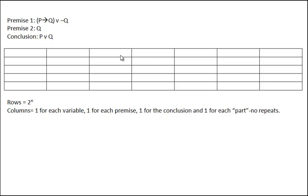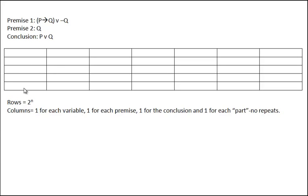When testing the argument for validity, we have to build a truth table. First, we determine the number of rows. The number of rows is always equal to two to the n, where n is the number of variables. In this case we have two variables, p and q, so we'll need a total of four rows.